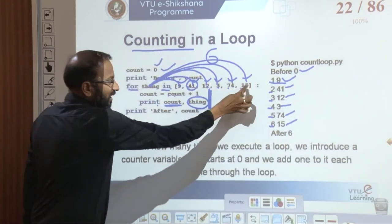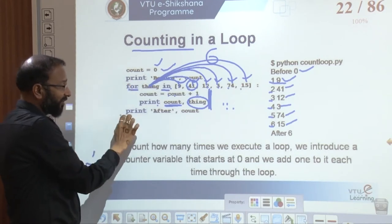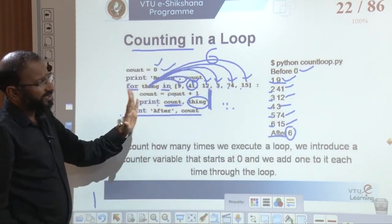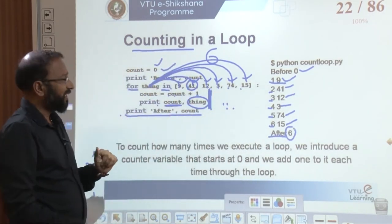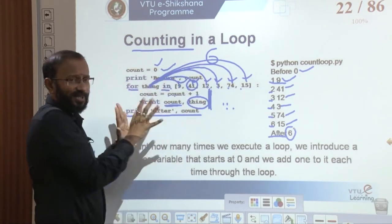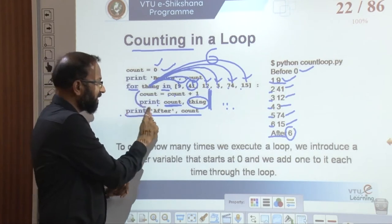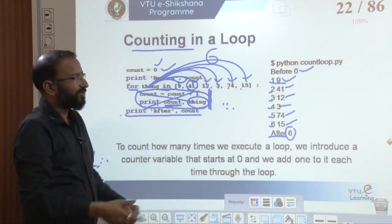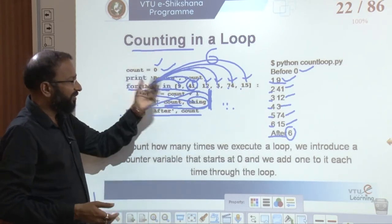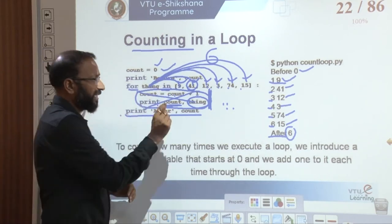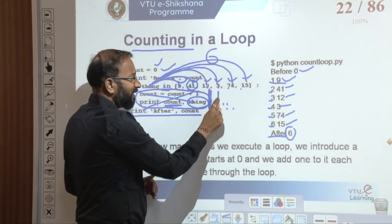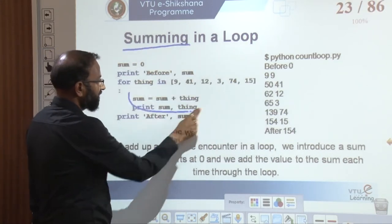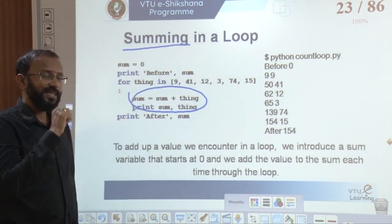After all elements are processed, the control comes out of the for loop and prints the final count value of 6. The key change from the largest-number example is only the logic inside the loop — the initial value, before, and after structure remains the same. Based on the problem statement, only the logic part changes. For example, finding a sum or finding an average — I will leave those as homework for you to figure out.